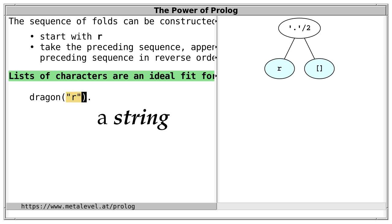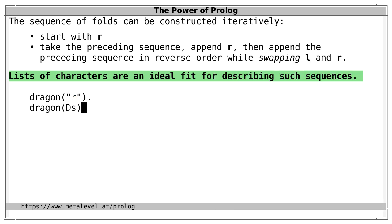And we call a list of characters also a string. And further, Ds is also such a sequence if, suppose that Ds0 is such a sequence, then to get the next sequence, we simply describe the steps from above. First, we need to take the sequence, append something to it, and then append more to it. And that's great, right?